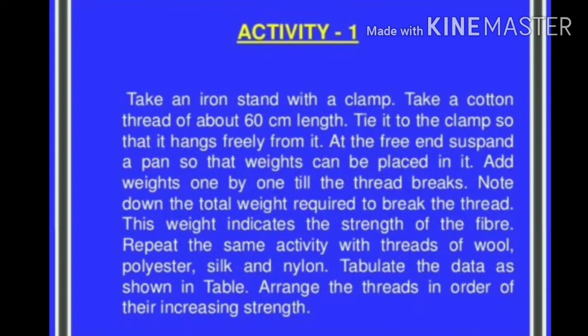Take an iron stand with a clamp. Take a cotton thread of about 60 cm length. Tie it to the clamp so that it hangs freely from it. At the free end, suspend a pan so that weight can be placed in it. Add weights one by one till the thread breaks. Note down the total weight required to break the thread. This weight indicates the strength of the fiber.